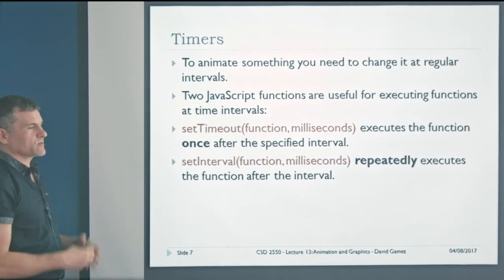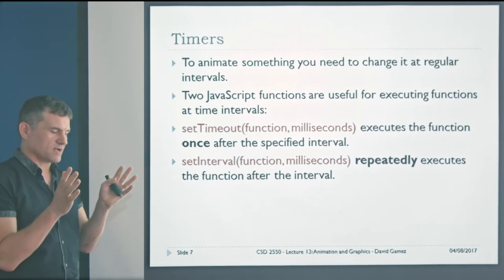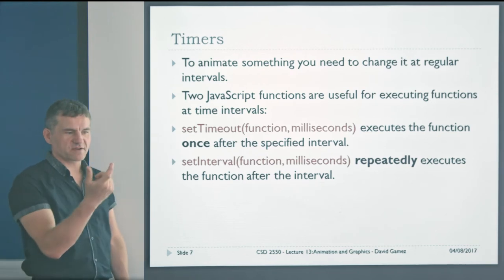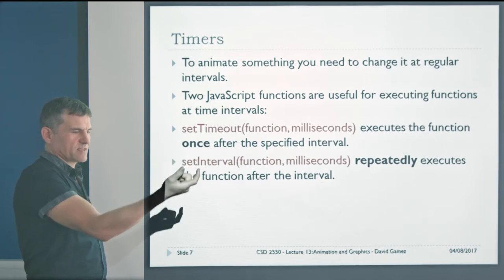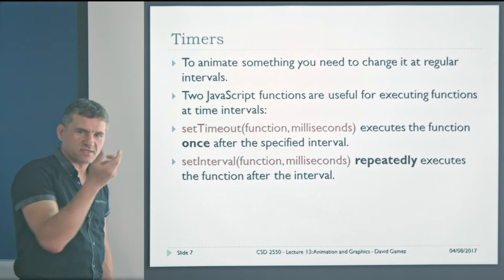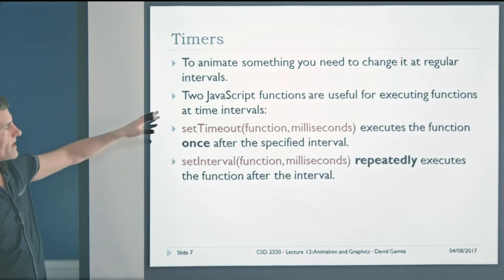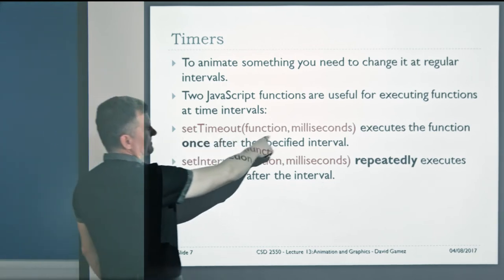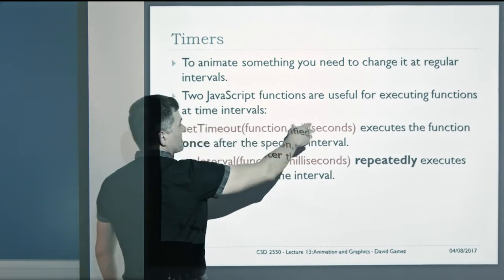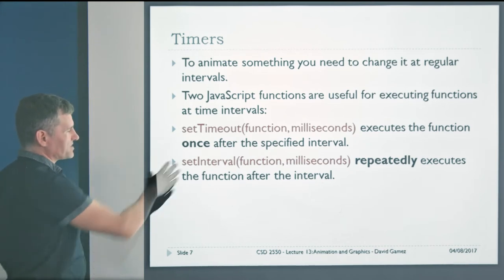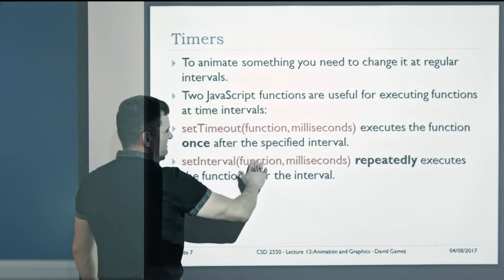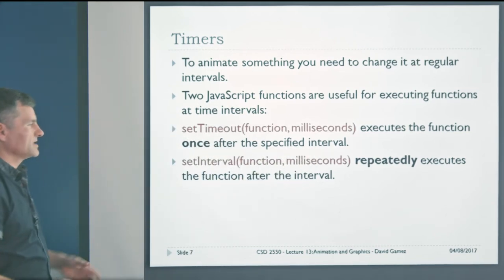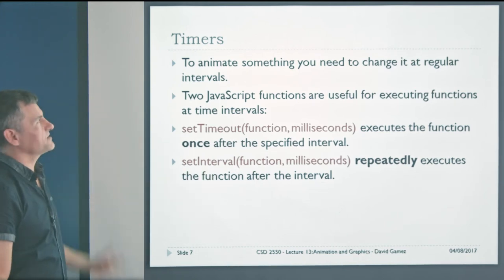If you want to do animation, what we need to do is set the position of the element and then change that position at a specified time interval. Animation is just like a film — you have the element at one position, then a little bit later you move it a little bit, and you do that at regular intervals to produce the illusion of movement. We use two JavaScript functions for this: setTimeout, which executes a function once after the specified interval in milliseconds, or for animation more often setInterval, which repeatedly executes a function at a specified interval until we tell it to stop.